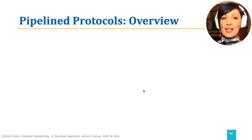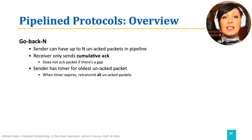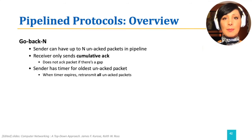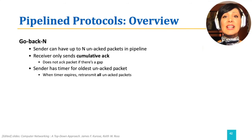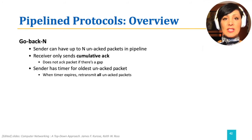In Go-Back-N, the sender can have up to N unACKed packets in the pipeline. The receiver only sends cumulative acknowledgements for the packets received.